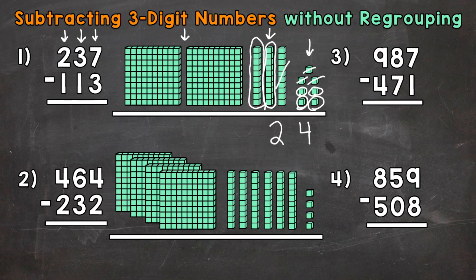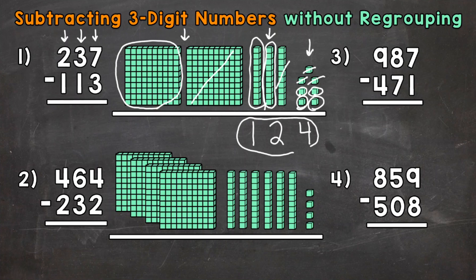Then we move left to the hundreds place. So we have two hundreds minus one hundred. We need to subtract or take away one hundred — we'll get rid of this one, subtract that hundred. And we have one hundred left. So we put a one in the hundreds place in our answer. So our final answer is one hundred twenty-four.